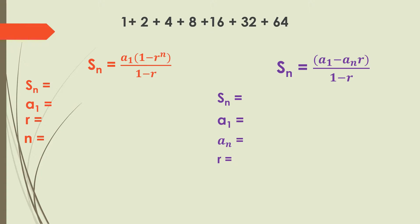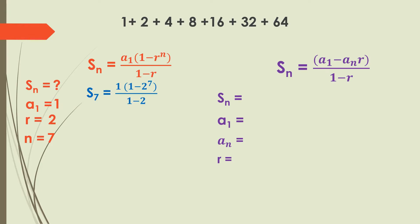So how do we use these formulas? Using the first formula — S sub n equals a sub 1 times (1 minus r raised to n) over (1 minus r) — we identify the variables. S sub n is unknown. A sub 1, the first term, is 1. R, the common ratio, is 2, obtained by dividing any consecutive terms. N, the number of terms, is 7. After obtaining these values, we replace the variables, giving us S sub 7.